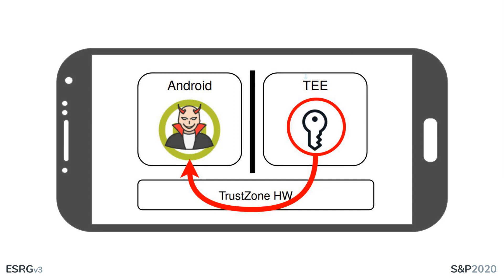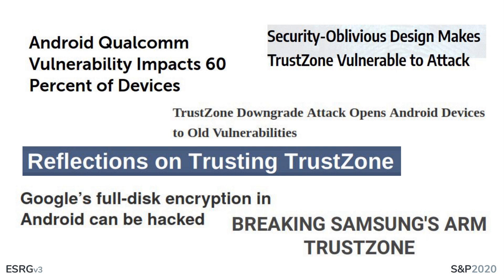However, the sad reality is that these systems have been successfully attacked multiple times, which has enabled attackers to retrieve the device's disk encryption keys, for example. Attacks like this reveal that millions of devices were and likely still are at risk. It's necessary to have an in-depth look at what makes these systems vulnerable, to pave the path for more secure TEs.